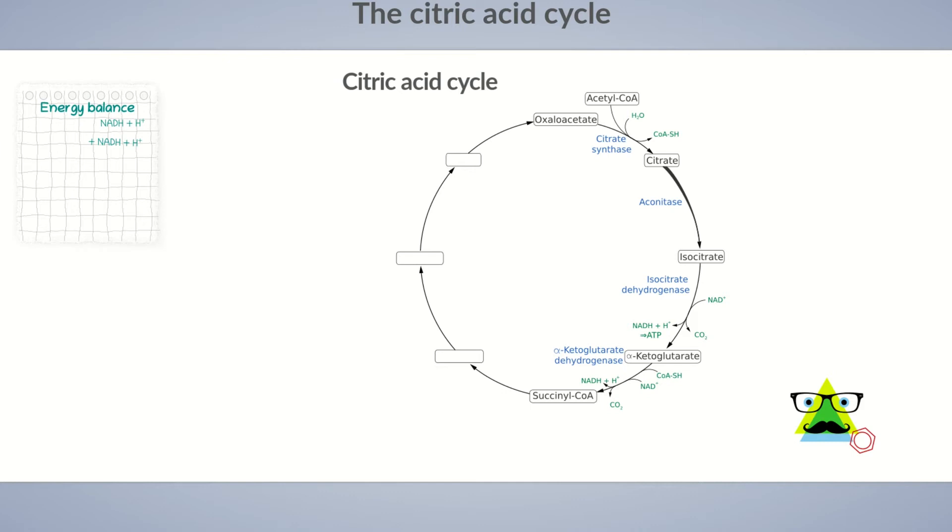The initial step to regenerate oxaloacetate involves the release of coenzyme A by succinyl-CoA synthetase, yielding succinate. The cleavage of the thioester bond releases energy, which is used for GTP production.